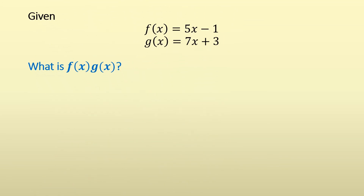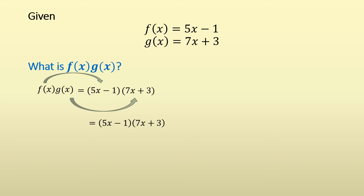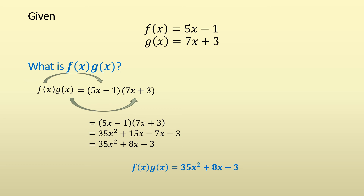Let's have the multiplication example. Given f(x) = 5x − 1 and g(x) = 7x + 3, what is the product f(x) · g(x)? We write (5x − 1)(7x + 3). Using the FOIL method: 35x² + 15x − 7x − 3. Combining like terms gives the simplified answer 35x² + 8x − 3. So the product of f and g is equal to 35x² + 8x − 3.